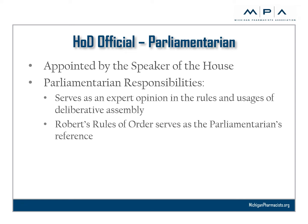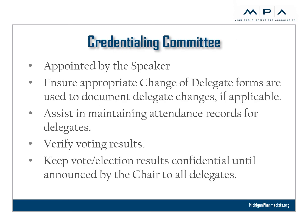The Parliamentarian is appointed by the Speaker of the House. Their responsibility is to serve as an expert opinion in the rules and usages of deliberative assembly, which we commonly refer to as parliamentary procedure. The Parliamentarian uses Robert's Rules of Order as their reference for conducting business of the House session. Next, we have the Credentialing Committee, which is also appointed by the Speaker of the House. The Credentialing Committee ensures appropriate change of delegate forms are used to document delegate changes if applicable, assists in maintaining attendance records for delegates, verifies voting results, and keeps vote and election results confidential until announced by the Chair — that is the Speaker — to all delegates.